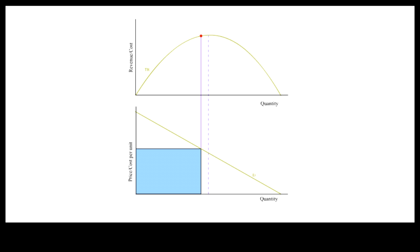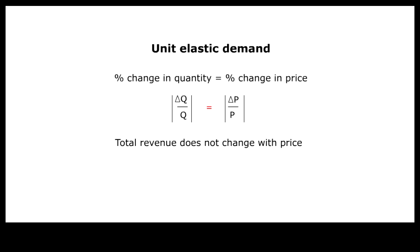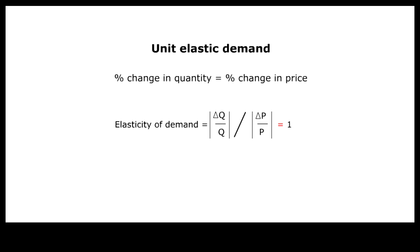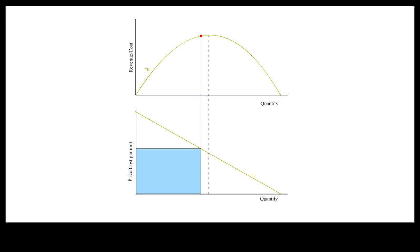Because a single price must be charged to all buyers, at some point the percentage change in quantity will be just equal to the percentage change in price, and total revenue stays the same when price is decreased. When that happens, demand is said to be unit elastic and the elasticity of demand has an absolute value equal to 1. For example, a 10% price decrease leading to a 10% quantity increase gives an elasticity of demand with an absolute value equal to 1. Total revenue reaches its maximum when demand is unit elastic.